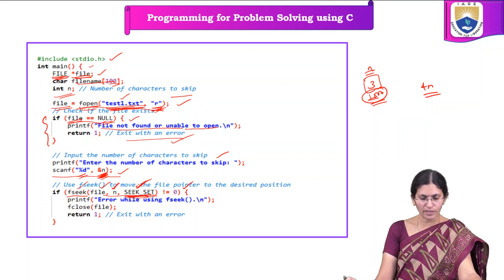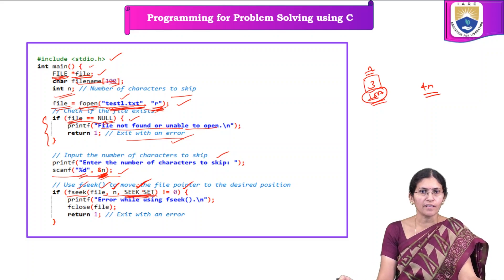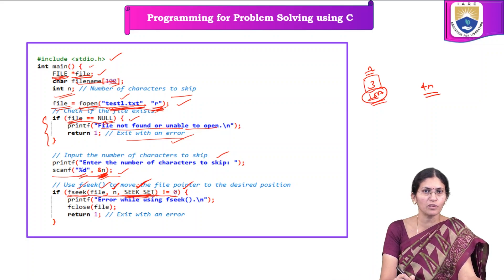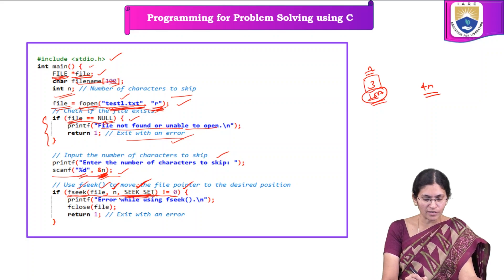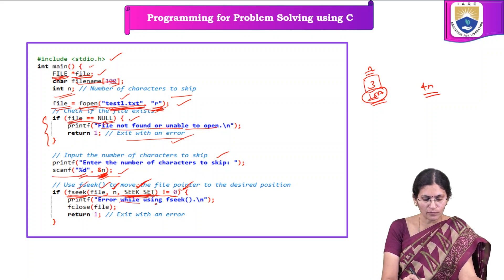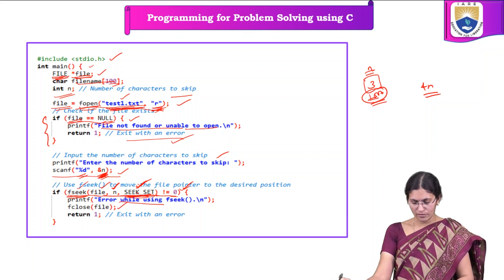If fseek is not able to place the file pointer at the specified location, it returns a non-zero value, indicating an error. In order to handle that, if fseek returns a non-zero value, an error message is printed on the screen and we need to close the file.